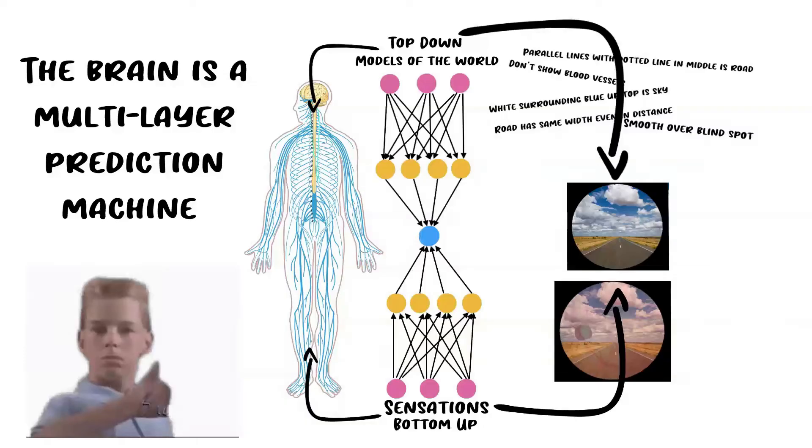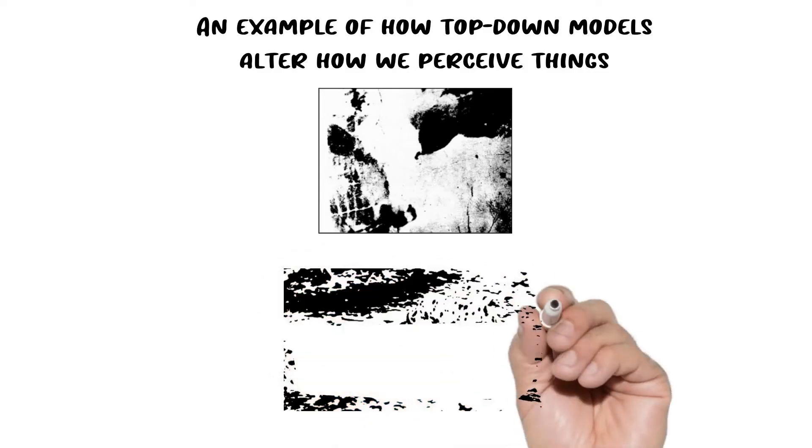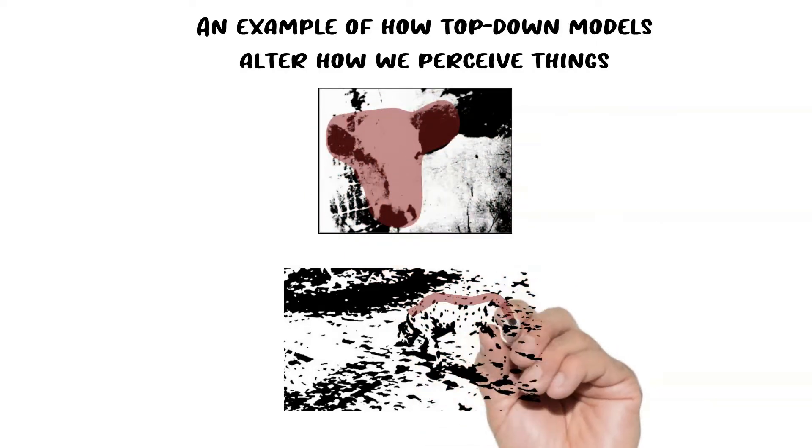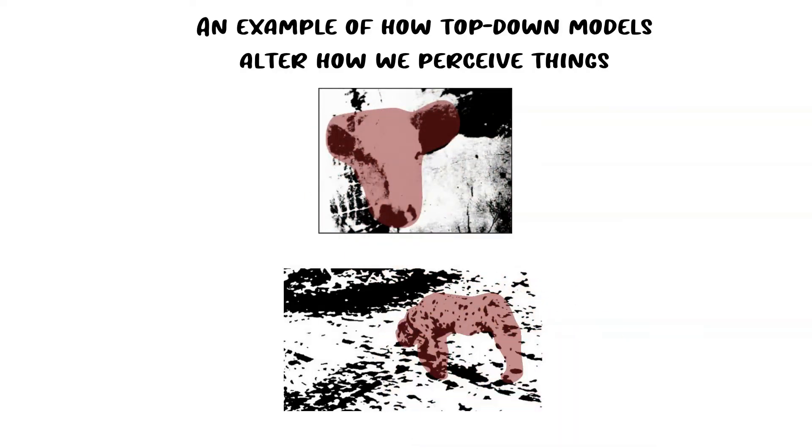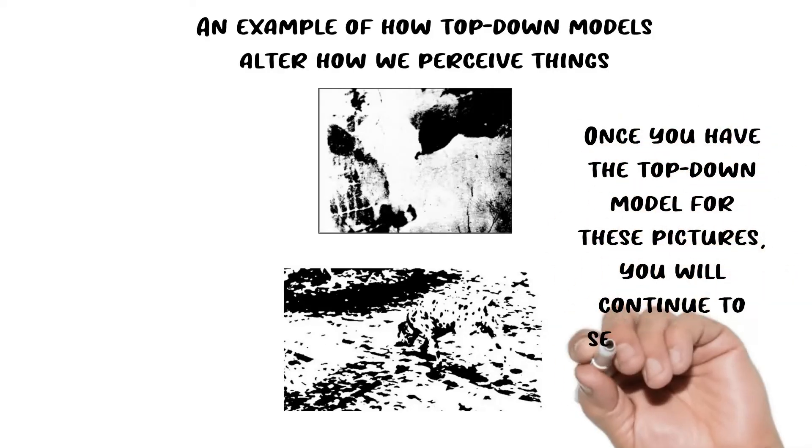Let me do a quick demonstration of how top-down hypotheses work to make sense of bottom-up data. Take a second and look at these pictures. Do they make sense to you? Now you can see that the top is a lovely little cow and the bottom is a dalmatian. But when I remove the visual aid, the top still looks like a cow and the bottom still looks like a dalmatian. Once I give you the top-down model, you see the pictures. According to the predictive processing model, this is how we perceive things all the time.